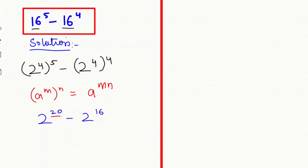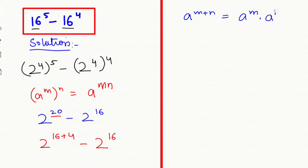Next I am going to split this power. So 2 to the power of 16 plus 4, minus 2 to the power of 16. Now I am going to apply the exponential rule that is a to the power of m plus n equals a to the power of m times a to the power of n. So this will be equal to 2 to the power of 16 times 2 to the power of 4, minus 2 to the power of 16.